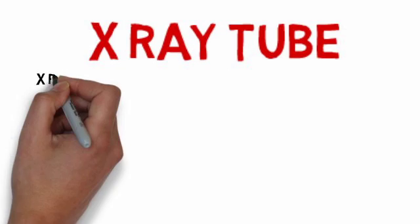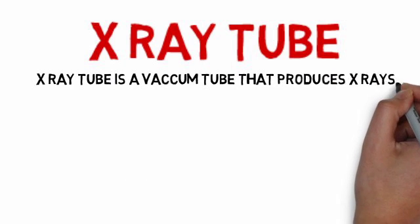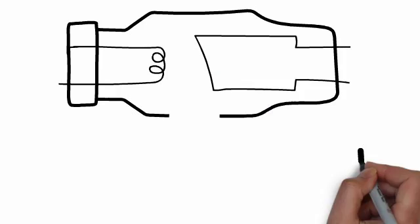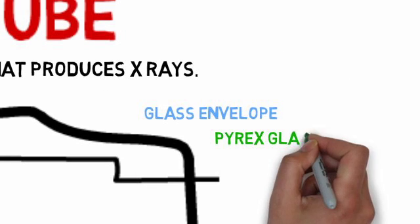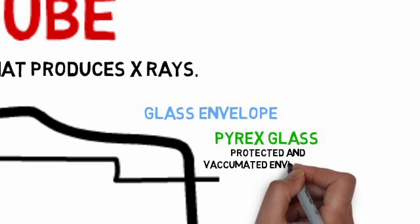X-ray tube is a vacuum tube that produces X-rays. It consists of a glass envelope which is made up of pyrex glass. This glass protects and provides a vacuumated environment.